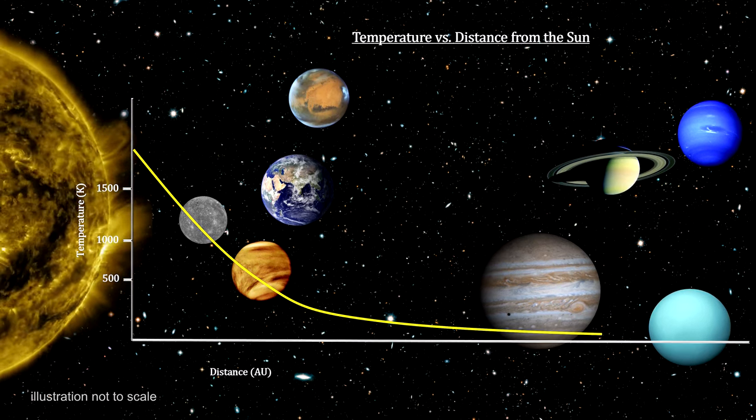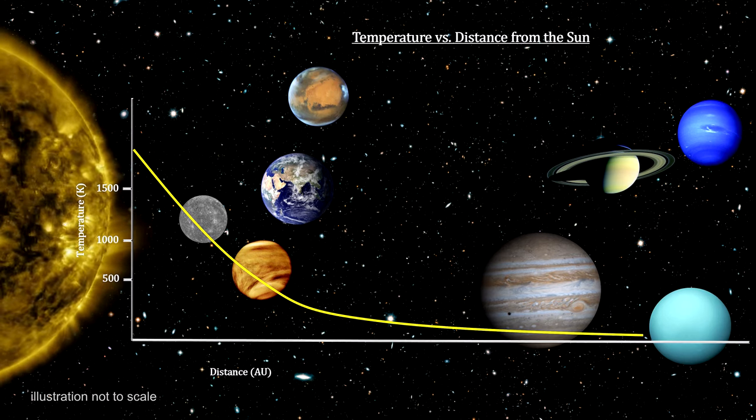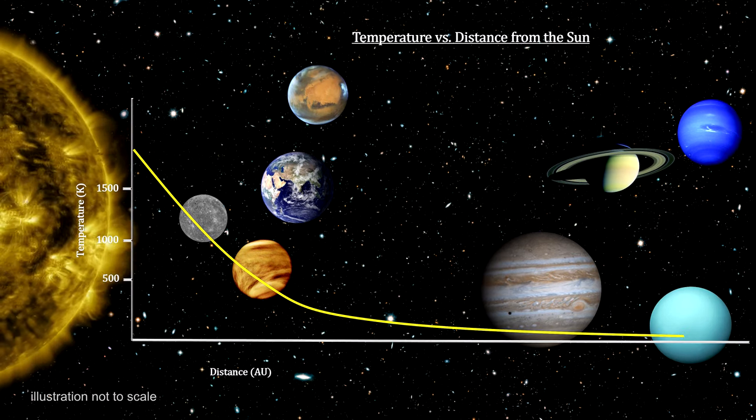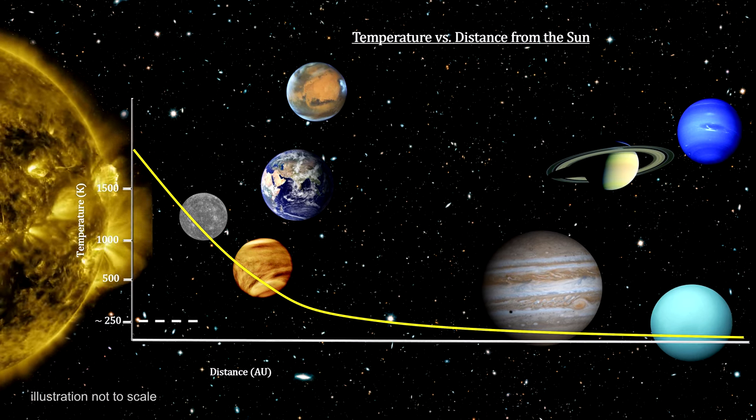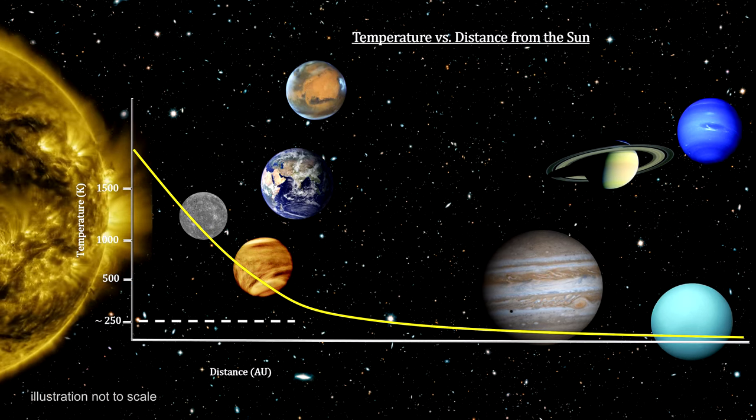In the outer parts, further from the central star, the water is frozen solid and therefore behaves like rocks. Planets out here have metal, rocks, and ice.